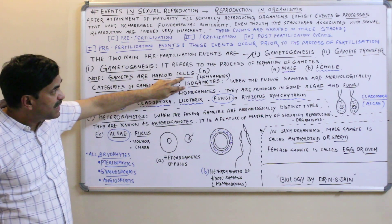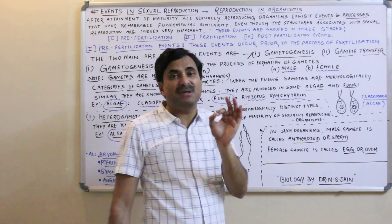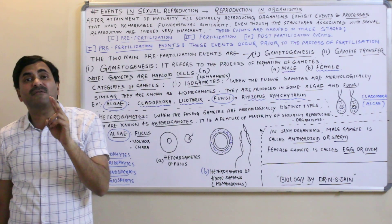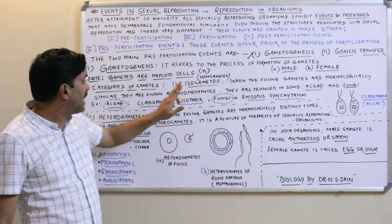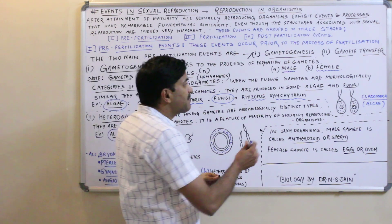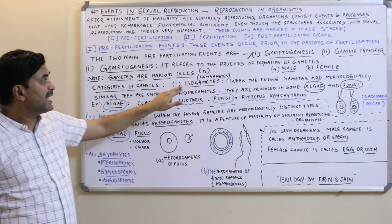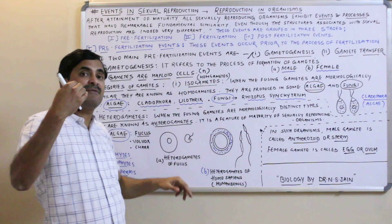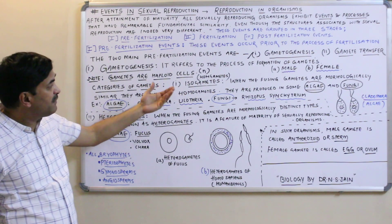Isogametes — as the name indicates — when the two fusing gametes are morphologically similar, exactly similar, you cannot distinguish between the male and female gamete because they are so similar. When the two fusing gametes are morphologically similar, they are called homogametes. These isogametes or homogametes are especially found in some algae and fungi. They are not a common type of gamete; they are rarely found — heterogametes are found in the maximum number of organisms.